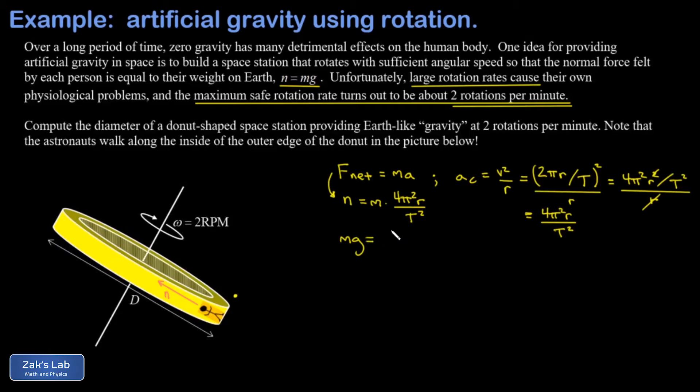Now we can plug in the fact that we want a normal force creating an artificial gravity similar to Earth's. We want the normal force to be equal to mg, where g is about 9.8 meters per second squared. The m's cancel out, which means it works the same for every astronaut on board.